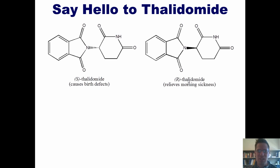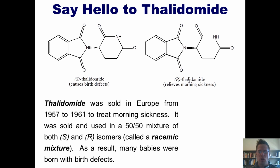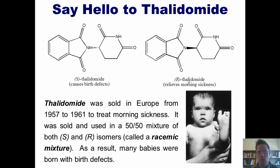So, as it turns out, thalidomide was sold in Europe from 1957 to 1961 to treat morning sickness in pregnant women. Sadly, it was sold and used as a 50-50 mixture of both S and R enantiomers. Now, that type of mixture is called a racemic mixture. Now, as a result, many babies were born with birth defects, and the birth defect caused by S-thalidomide is malformed limbs. So, the question is, does the three-dimensional shape of a molecule actually matter when the molecule is being used as a medicine? Of course, the answer is yes.